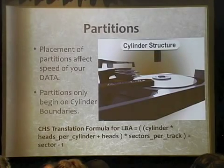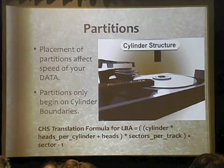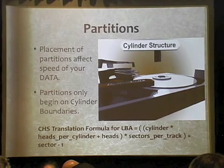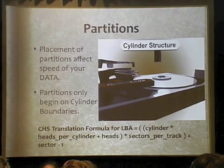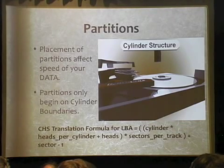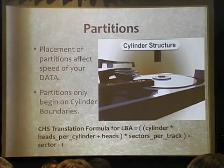Now, partitions. The placement of your partition affects speed directly, and a lot of people don't realize this. The CHS translation formula means partitions begin on cylinder boundaries. Most people understand cylinders — you have two platters and content written through them; that's your cylinder. Your heads are in the same location when moving. We've virtualized some of that and have zone tables, but we still respect cylinder boundaries.